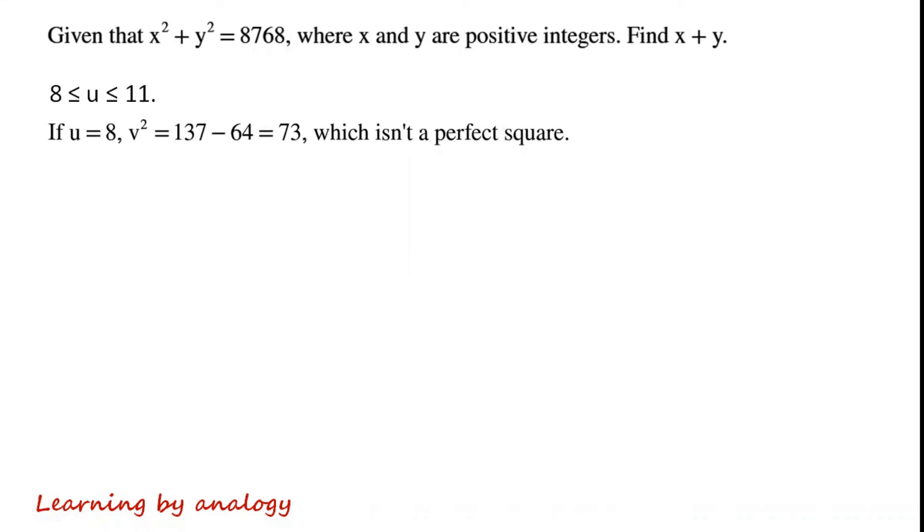Therefore, 8 is less than or equal to u is less than or equal to 11. If u equals 8, v squared equals 137 minus 64 equals 73, which isn't a perfect square. If u equals 9, v squared equals 137 minus 81 equals 56, which isn't a perfect square.